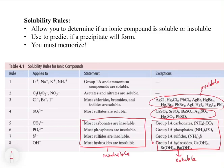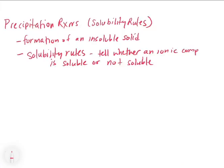So let's jump back now and look at some precipitation reactions. Let's take a look at an example, and then we're going to look at some steps that will help you start to process these metathesis reactions. So let's say that you're given two ionic compounds: NaCl aqueous and silver nitrate aqueous.